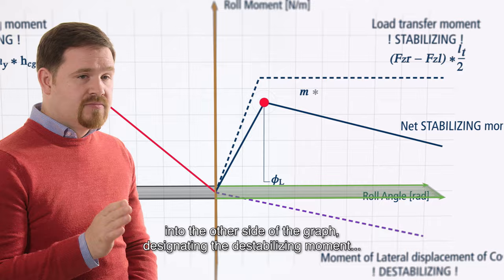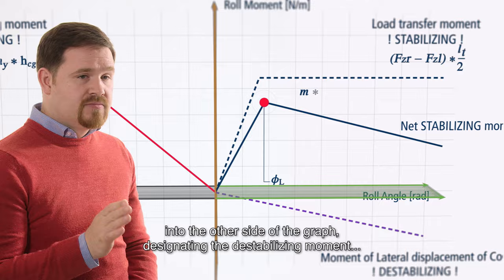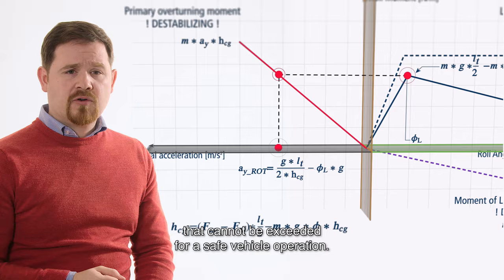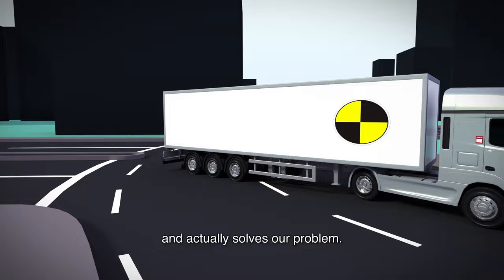If we then graphically project this maximum into the other side of the graph, designating the destabilizing moment, we are able to identify the exact lateral acceleration that cannot be exceeded for a safe vehicle operation. This acceleration is called static rollover threshold and actually solves our problem.